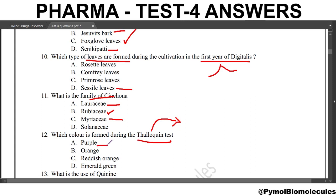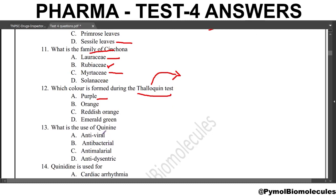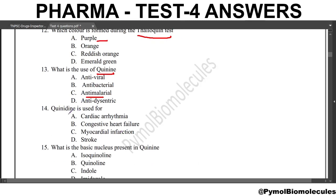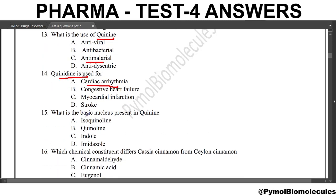Next question: what is the use of quinine? Quinine is a drug from Cinchona. The answer is anti-malarial. Anti-malarial is the property of quinine. Next question: quinine is used for? Quinidine is also from Cinchona. Quinidine is a cardiac anti-arrhythmic drug. What is the basic nucleus present in quinine? It will be quinoline.